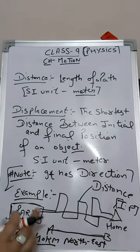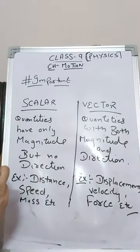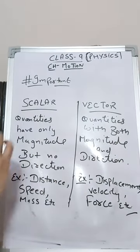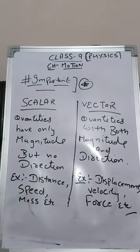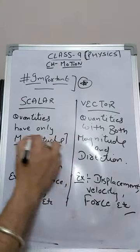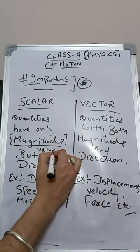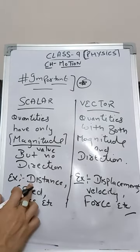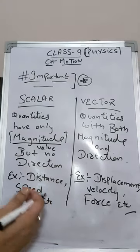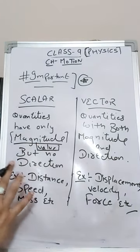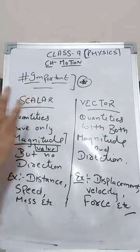Next we will discuss scalar and vector quantities. Scalar quantities are those quantities which have only magnitude but no direction — magnitude means a value. Examples of scalar quantities are distance, speed, and mass. For instance, distance can be 10 km, 20 km, or 30 km — it is only a simple value with no direction. Such quantities are called scalar quantities.